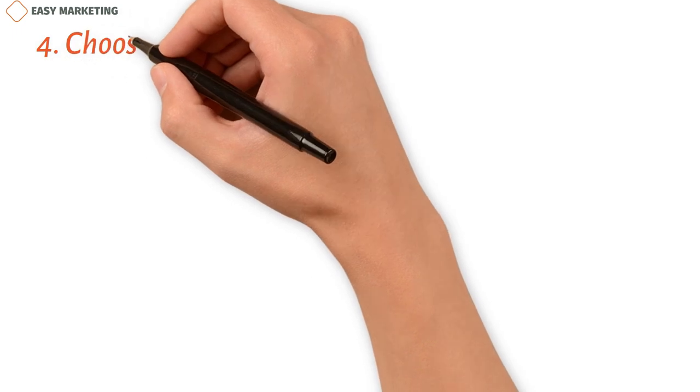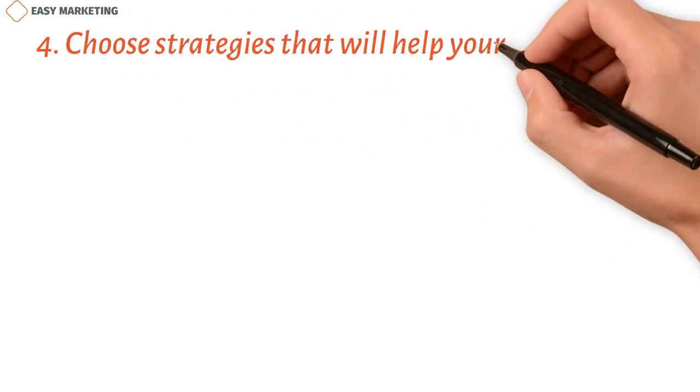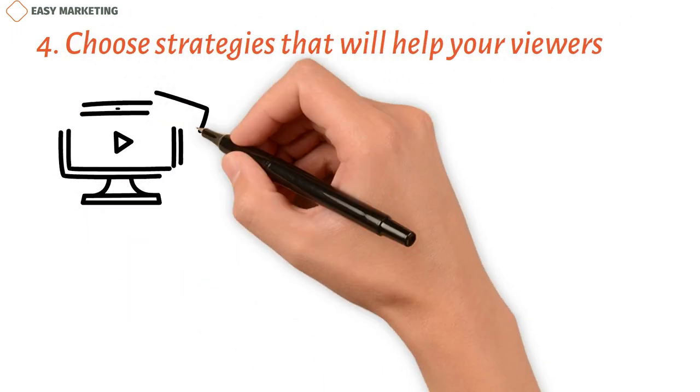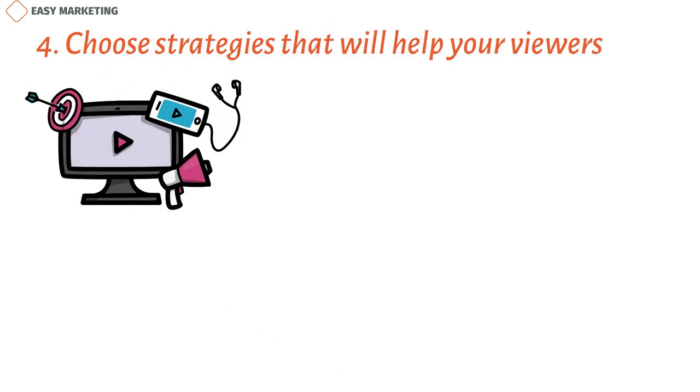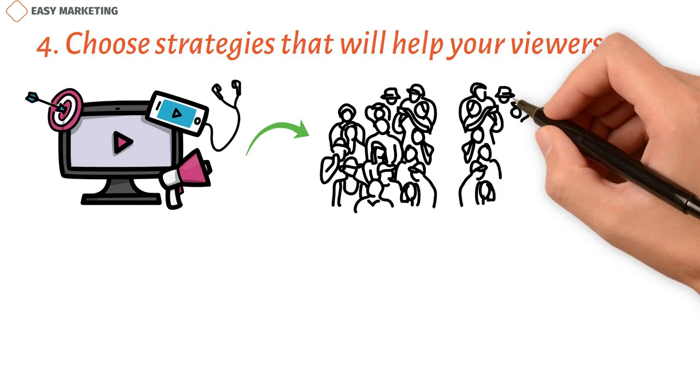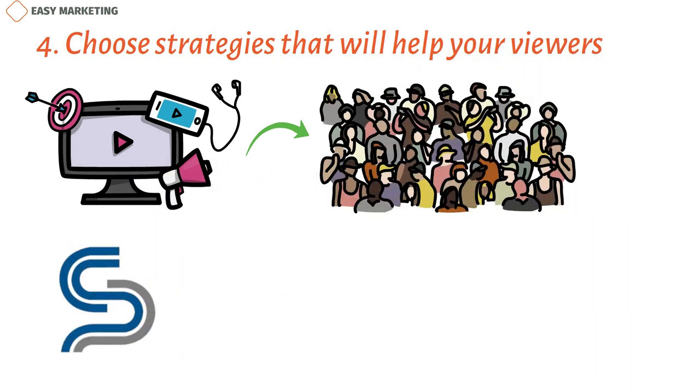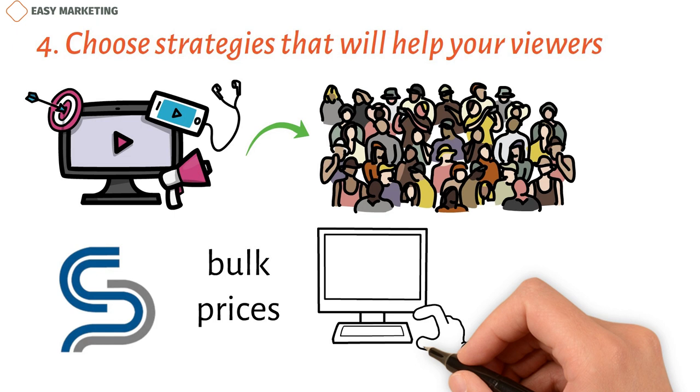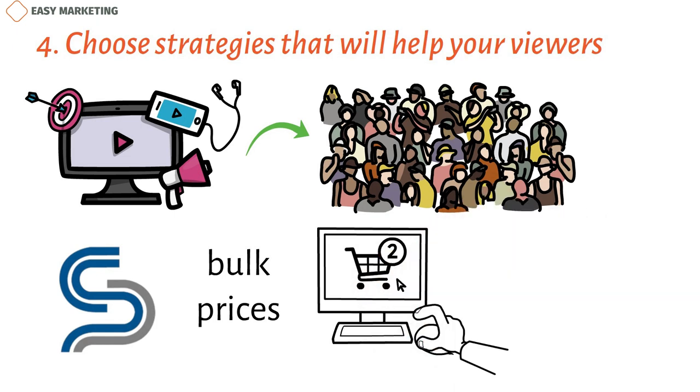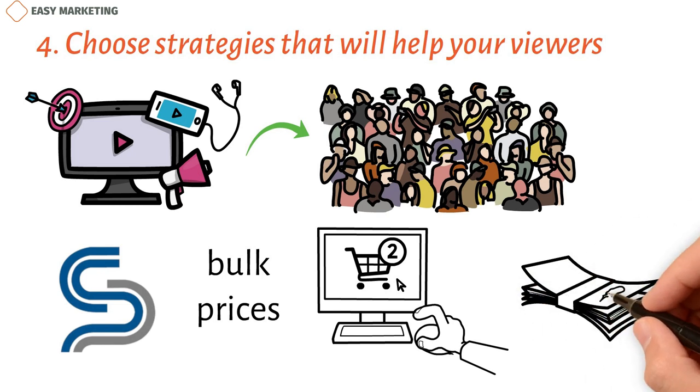Choose strategies that will help your viewers. Make sure that everything you do for marketing and customer service, from social media to website content to shopping cart choices, is geared toward the audience you've chosen. For example, Salinity helps business buyers by using bulk prices. Since the products aren't too complicated, buyers can shop and buy straight online without going through any other touch points. They can also save money by buying more at once.